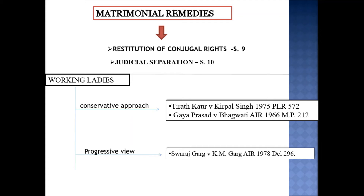The explanation to Section 9 states: where a question arises whether there has been a reasonable excuse for withdrawal from the society, the burden of proving reasonable excuse shall be on the person who has withdrawn from the society. For restitution of conjugal rights, the respondent must have withdrawn from the society of the petitioner; there must not be any reasonable cause for that withdrawal; and the court must be satisfied about the truth of the statement in the petition and find no legal ground to refuse the decree.